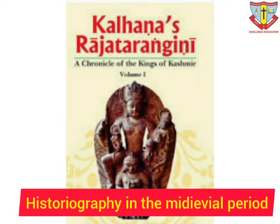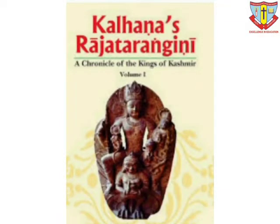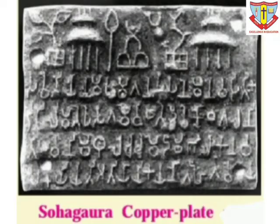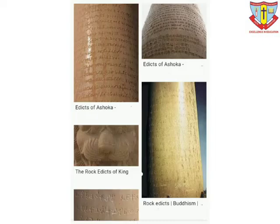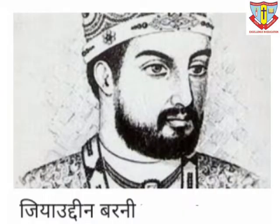Historiography in the Medieval Period. The style of writing Raj Tarangini — the history of Kashmir by Kalhana in the 12th century — is quite close to the concept of modern historiography. Kalhana himself says that he wrote this text after critically examining various sources like inscriptions, coins, remains of ancient monuments, dynastic records, and local traditions.